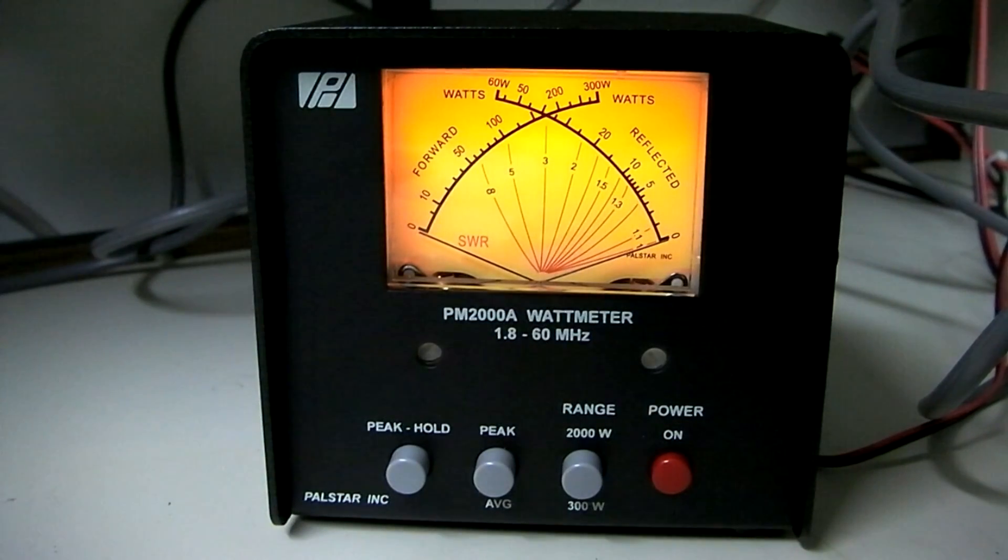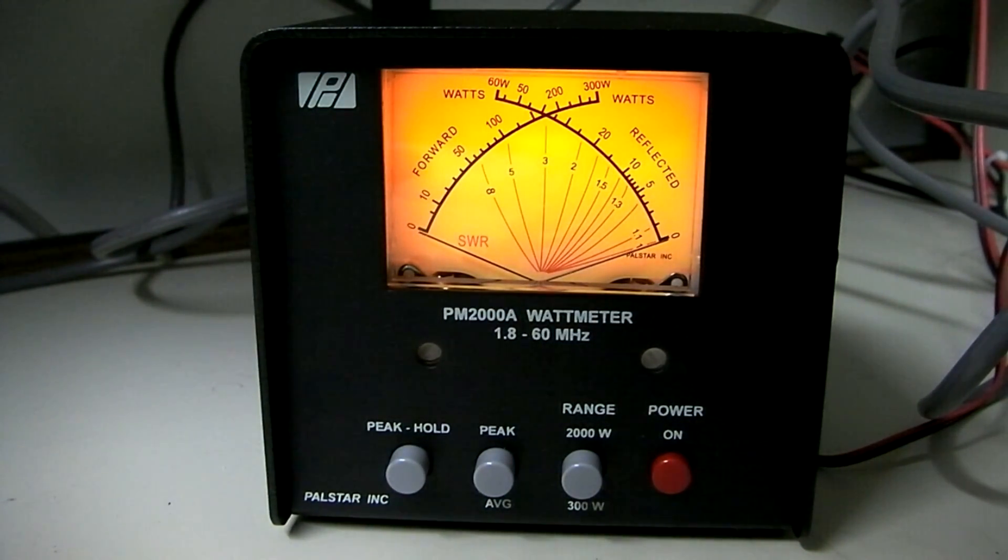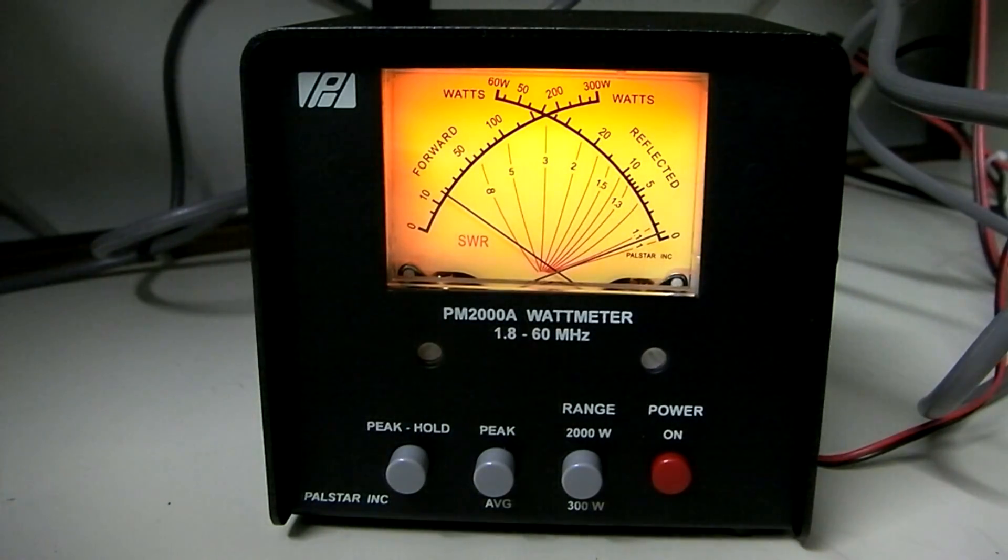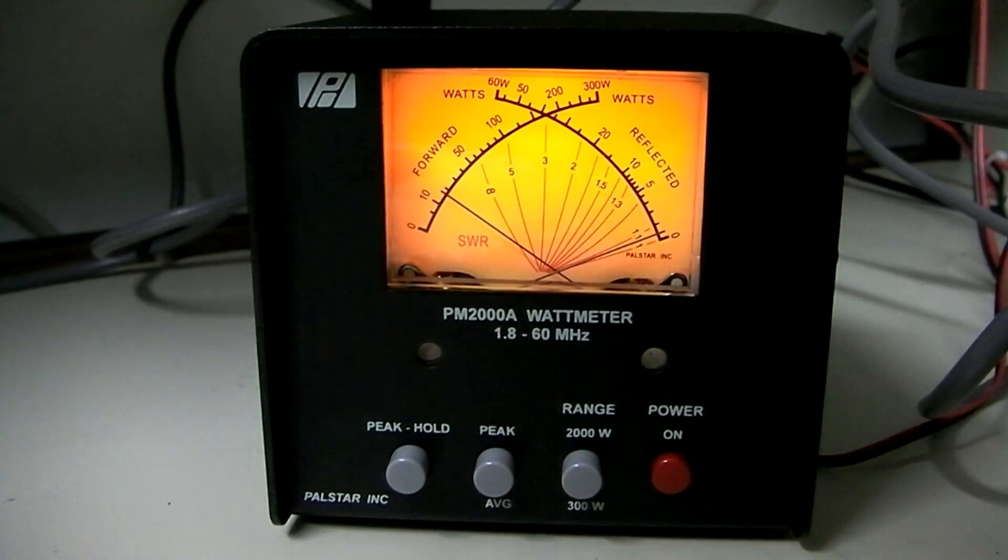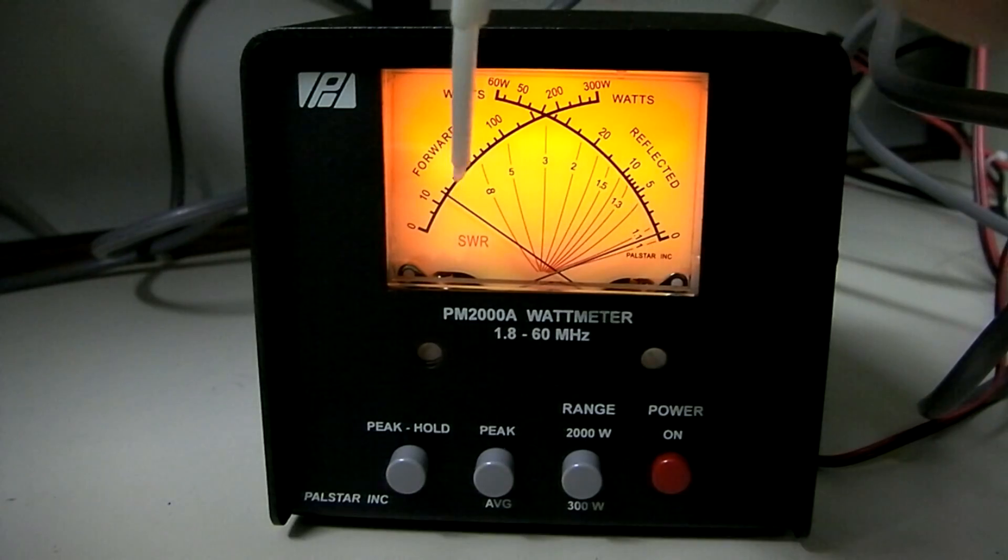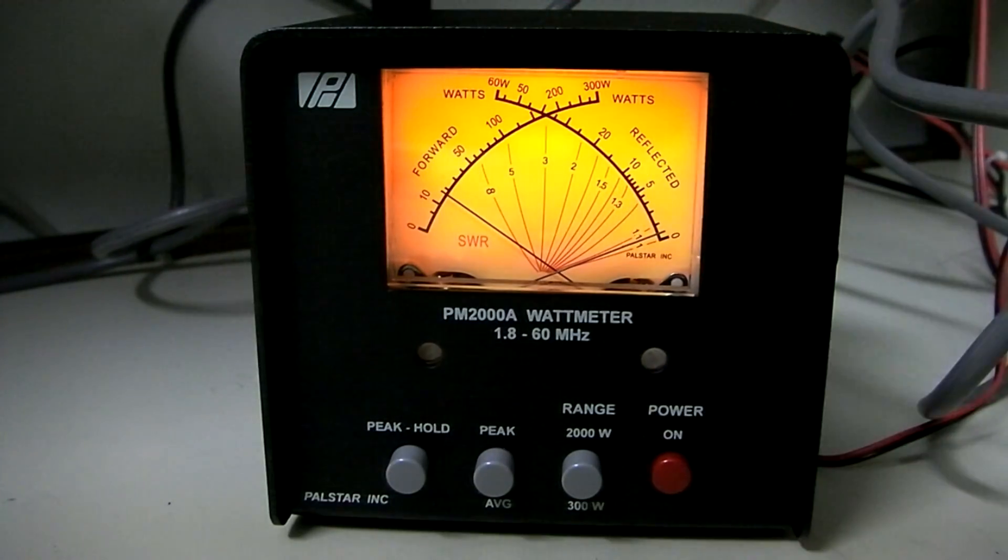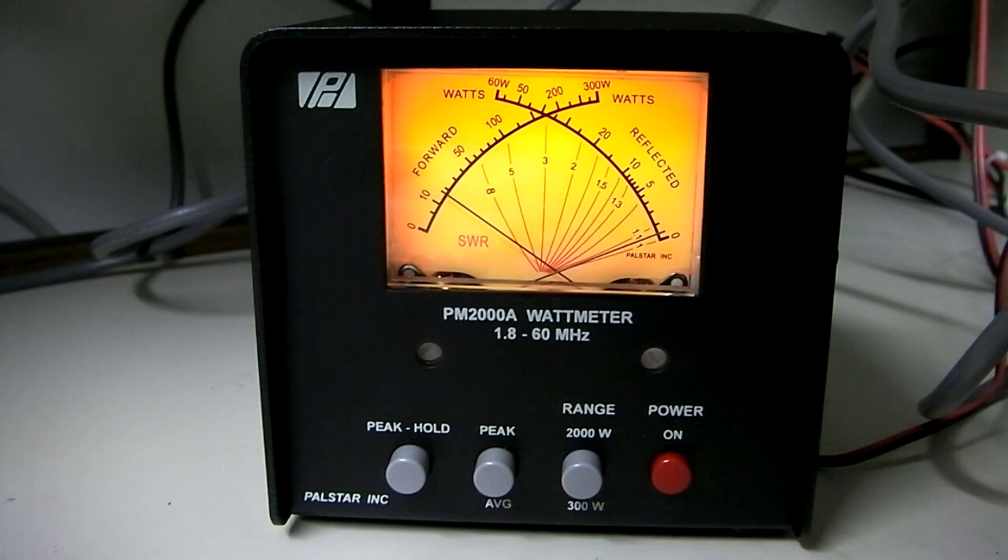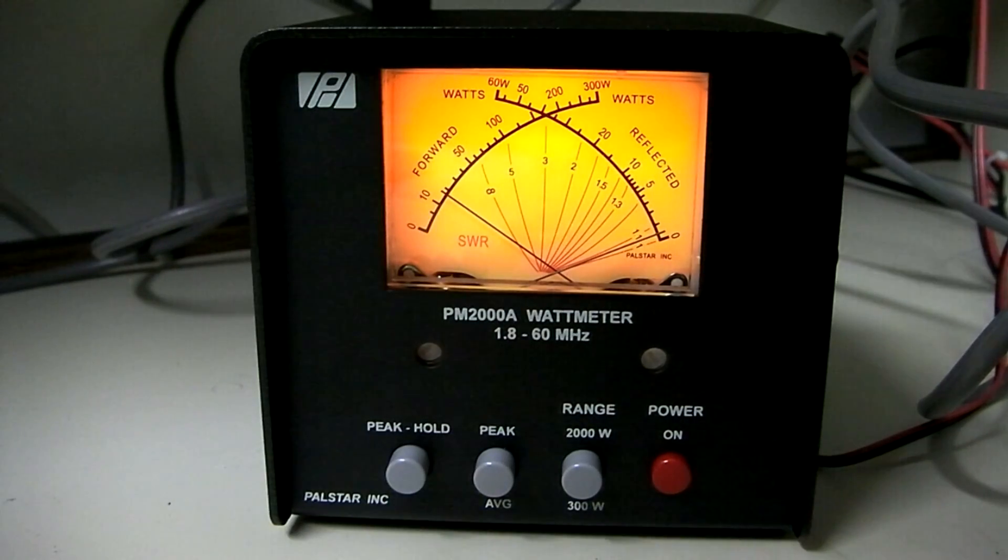We're in AM mode. We're going to key up and put just about 20 watts into the meter, and we're running through a low-pass filter and into a dummy load. So you see the meter is showing right about 18, 19 watts, which should be basically exactly correct for what we're doing right now.